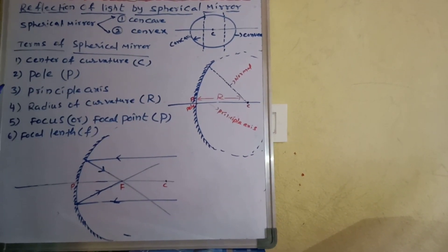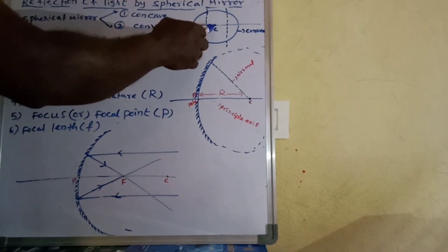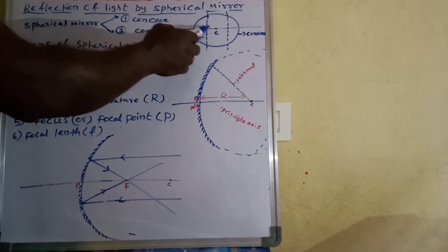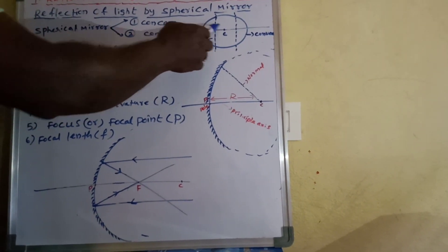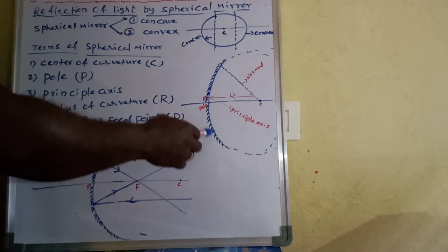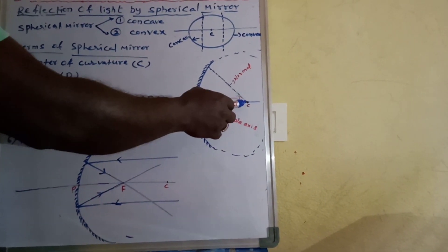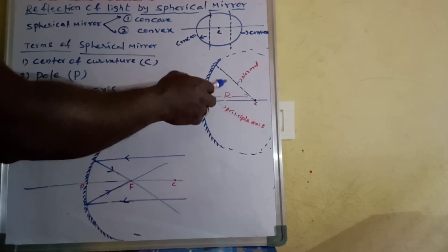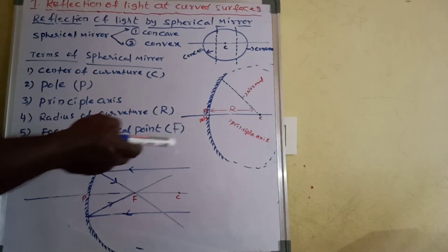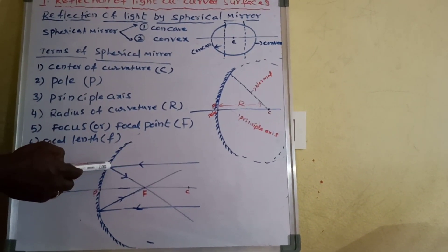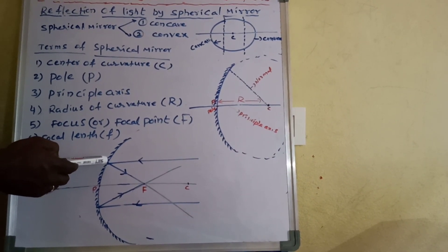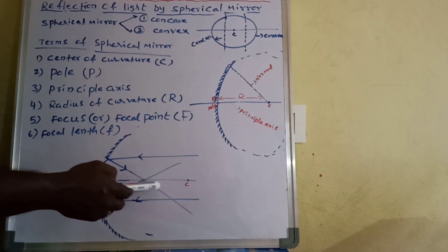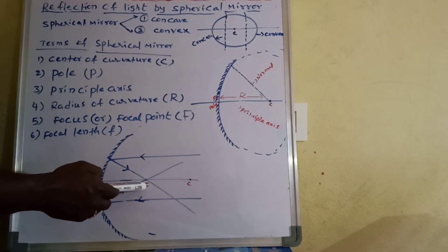The radius of curvature is the radius of the hollow sphere of glass. The distance between the center of curvature and the pole is also the radius of curvature. Rays of light parallel to the principal axis, after reflection on the concave mirror, meet at a point on the principal axis. That point is called the focal point, denoted by capital F.